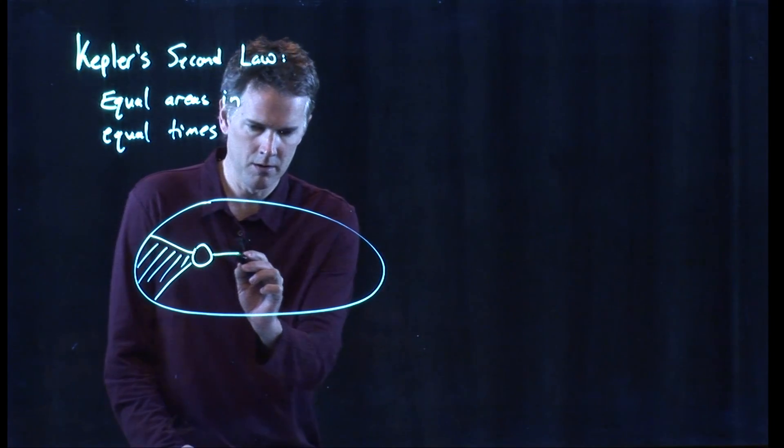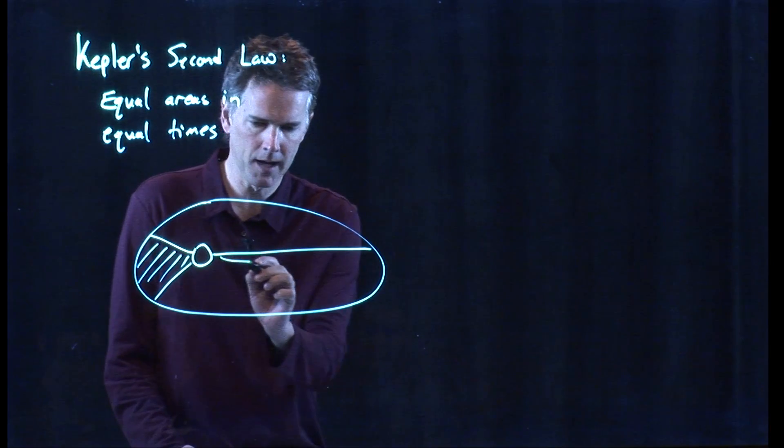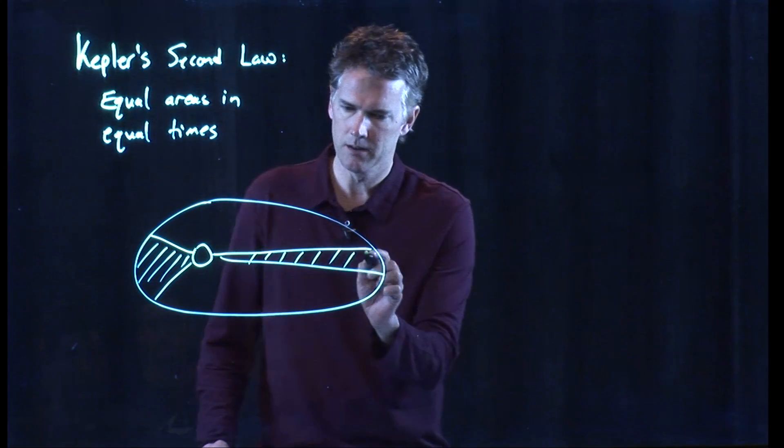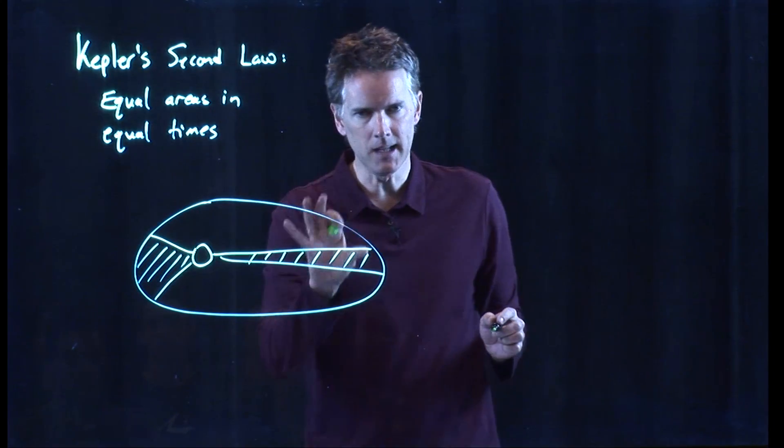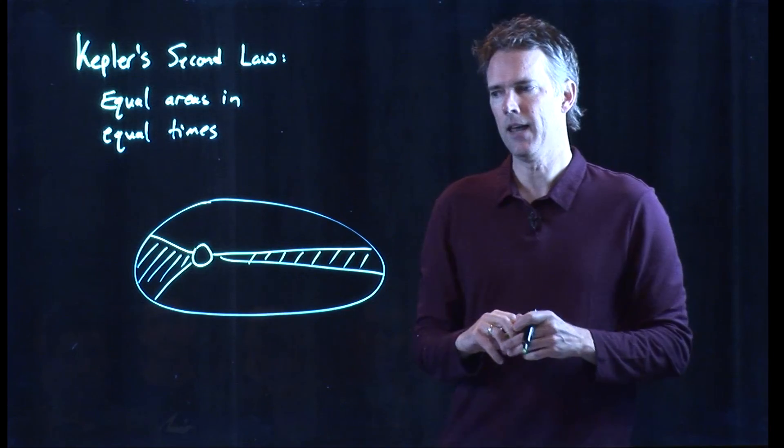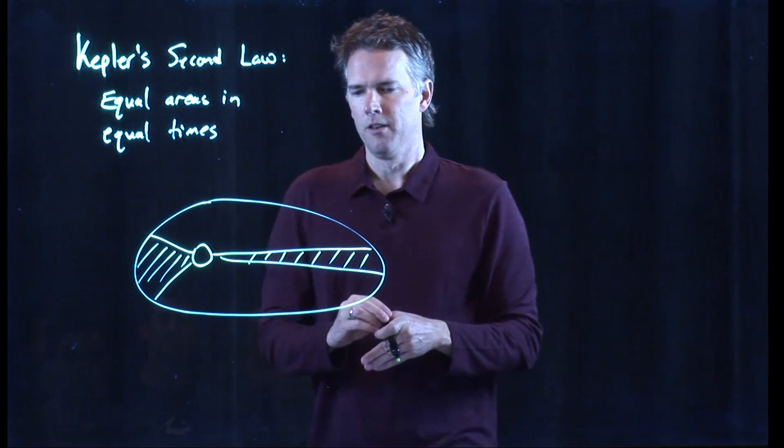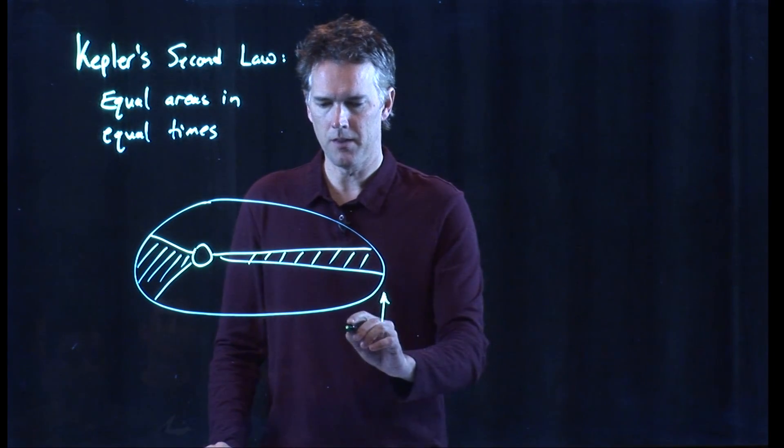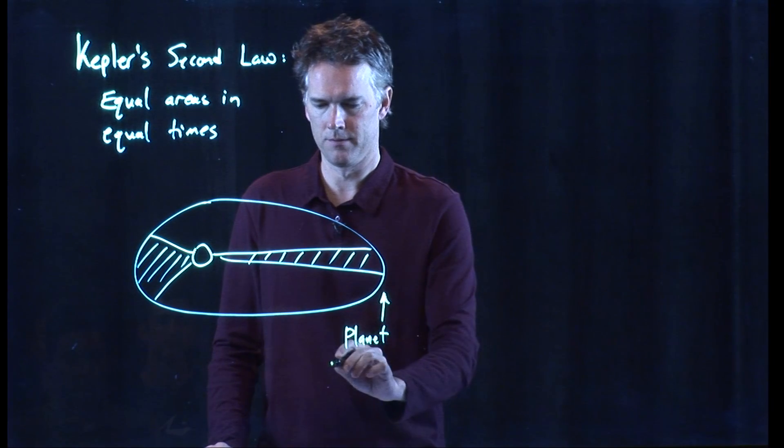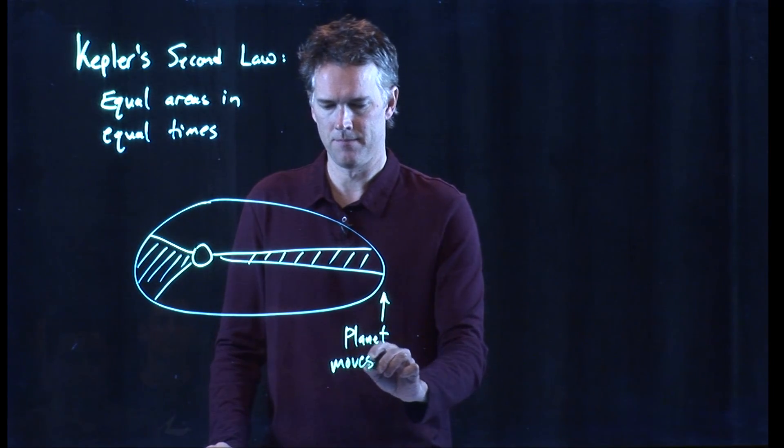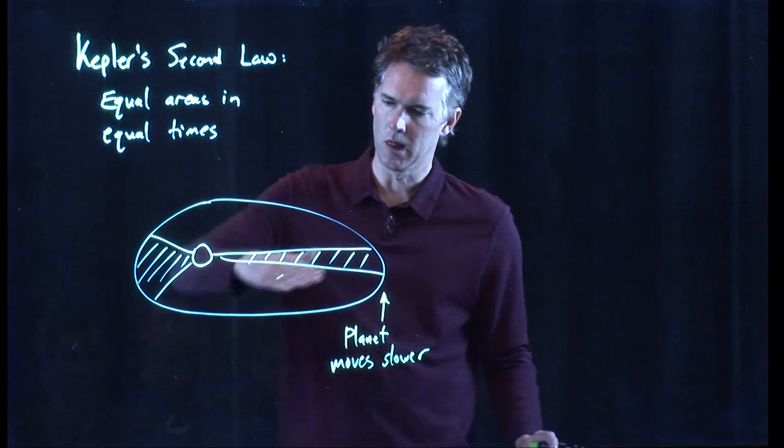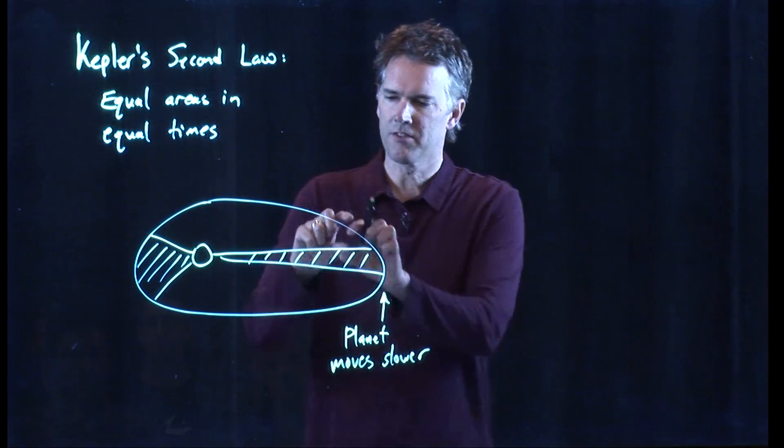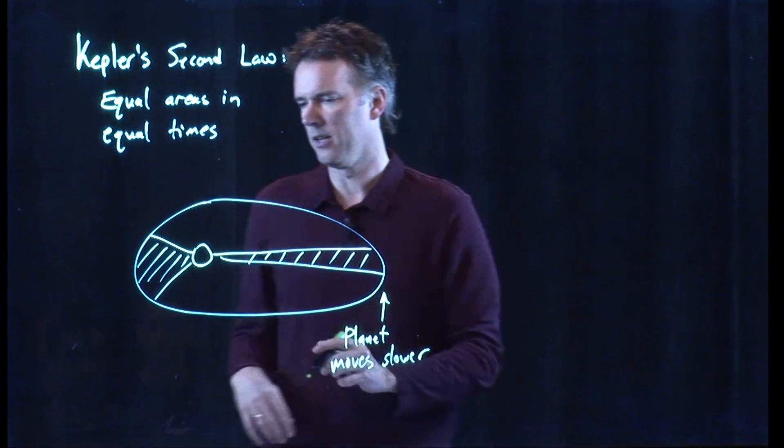It turns out if you set your watch for a month when the planet is farthest from the Sun, that area is exactly the same. This area is exactly equal to this area. And that should tell us a few things right off the bat. Since this is very far from the Sun, this has to mean that the planet is moving slower out here. A longer radius means that if that area is going to be equal, it's got to be long and thin, which means the planet is moving slower.